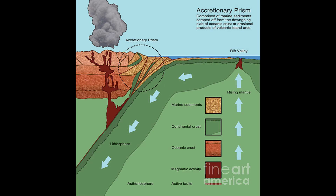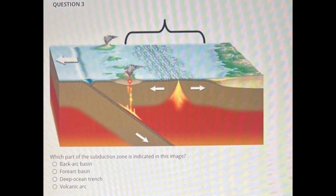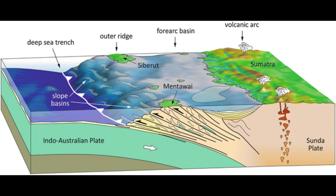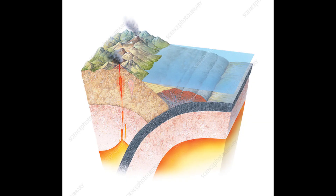Accretionary wedges are forming above nearly every subduction zone on the planet. However, these accretionary wedges presently border open oceans that have not yet closed by plate tectonic processes. Eventually the movements of the plates and continents will cause the accretionary wedges to become involved in plate collisions that will dramatically change their character. They are typically overprinted by additional shortening, faulting, folding, and high-temperature metamorphism, and intruded by magmas related to arcs and collisions.